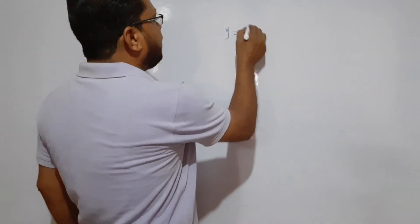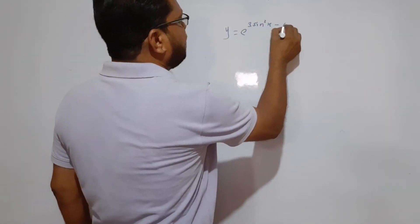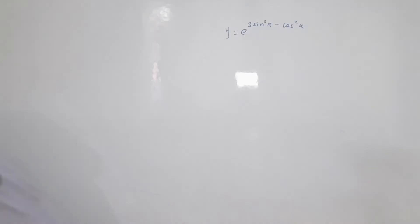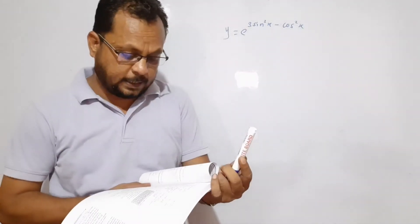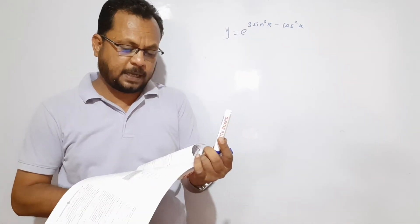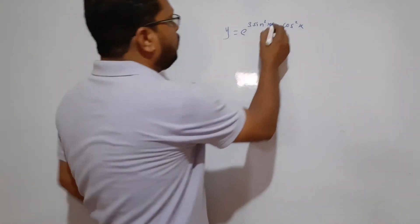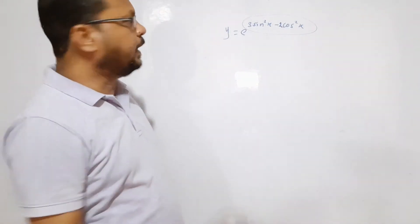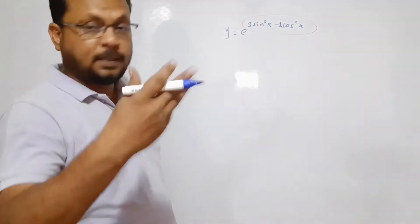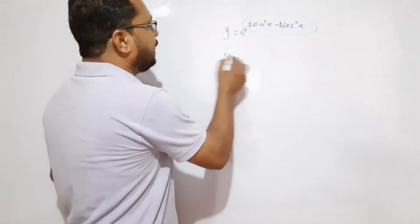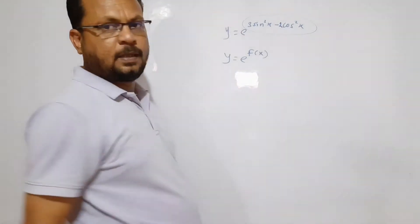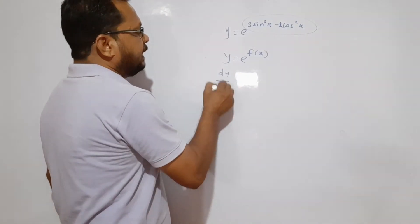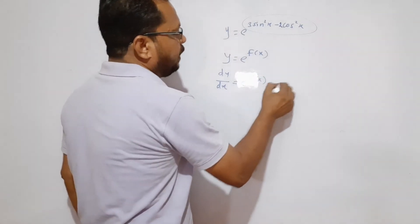One more example from the book: y = e^(3sin²x - 2cos²x). Here x is in the form of a function in the exponent, so it is like e^(f(x)). For this form, dy/dx = e^(f(x)) × f′(x). So dy/dx = e^(3sin²x - 2cos²x) into d/dx of (3sin²x - 2cos²x).